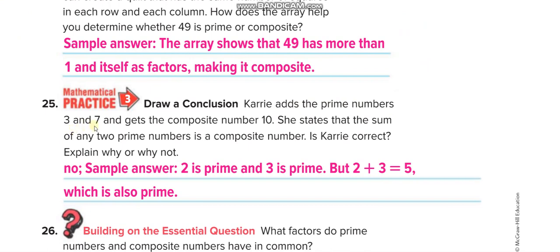Carol added the prime numbers three and seven to get the composite number ten. She states that the sum of any two prime numbers is always a composite number — but she is wrong. For example, two is prime and three is prime; if you add them you get five, which is prime again. Sometimes the sum of two primes gives a composite like three plus seven equals ten, and sometimes it gives a prime like two plus three equals five.